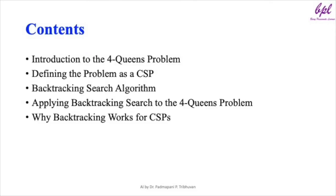Here is an overview of what we will cover in this video on solving the four queens problem using CSP and backtracking. We will begin with an introduction to the four queens problem, then move on to how we can represent it as a CSP, defining the problem in terms of variables, domains, and constraints. Following this, we will explain the backtracking search algorithm, demonstrate how we apply it step by step, include a visualization of the backtracking process, and discuss why backtracking works for CSP.